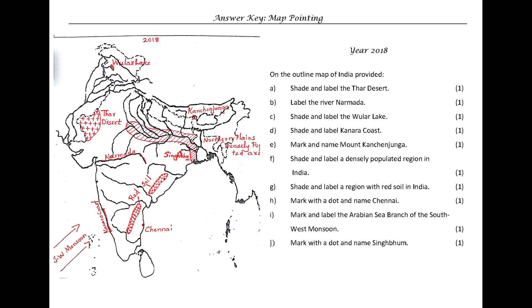Year 2018. On the outline map of India provided: A. Shade and label the Thar Desert. B. Label the River Narmada. C. Shade and label the Wular Lake. D. Shade and label the Konkan Coast. E. Mark and name Mount Kanchanjunga. F. Shade and label a densely populated region in India. G. Shade and label a region with red soil in India. H. Mark with a dot and name Chennai. I. Mark and label the Arabian Sea Branch of the Southwest Monsoon. J. Mark with a dot and name Singhbhum.